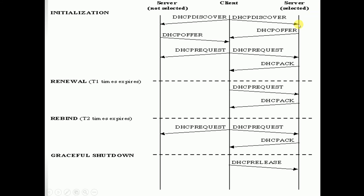The final packet is DHCP Acknowledgement, which comes from the server whose offer was accepted by the client. The IP address is now assigned. The server is informed of the client's interest, and the process is complete. To summarize: DHCP Discover goes out, DHCP Offer comes back, one offer is accepted via DHCP Request, and the IP address is assigned via DHCP Acknowledgement.